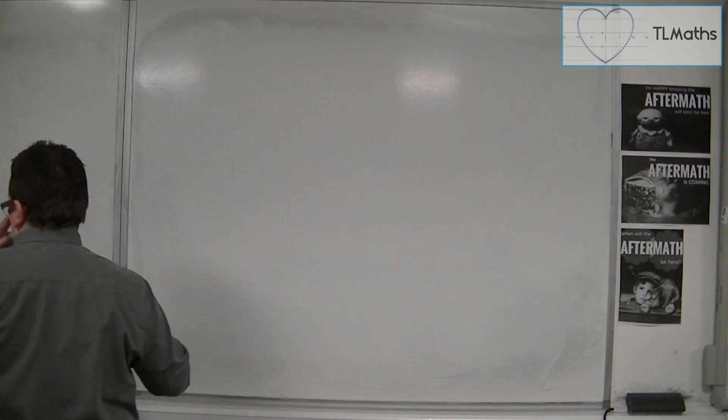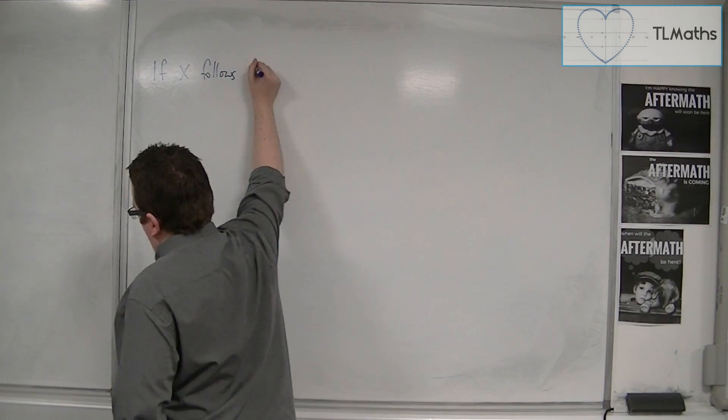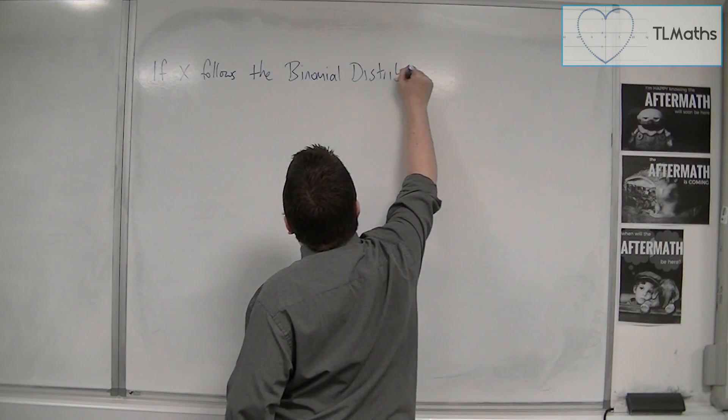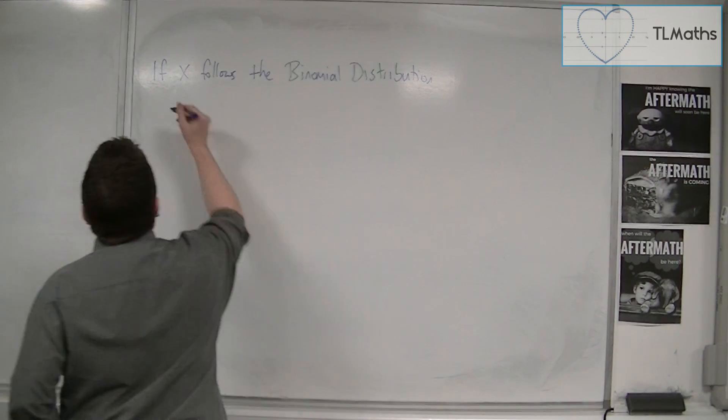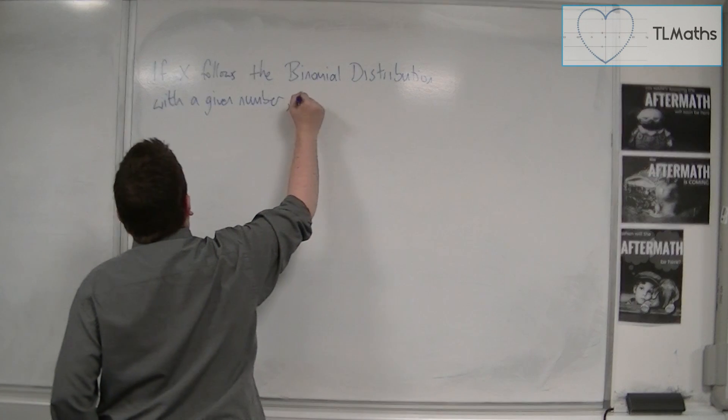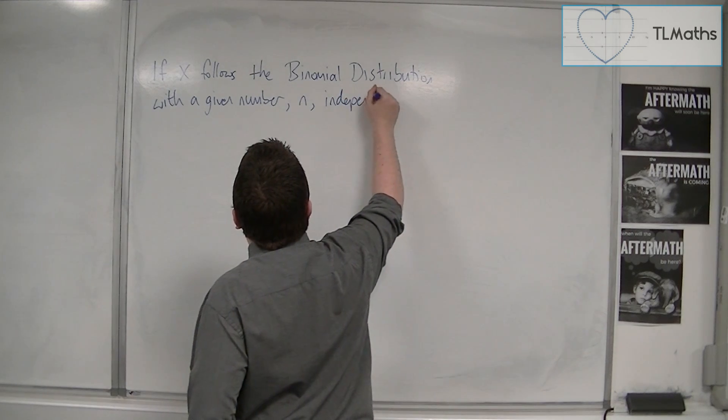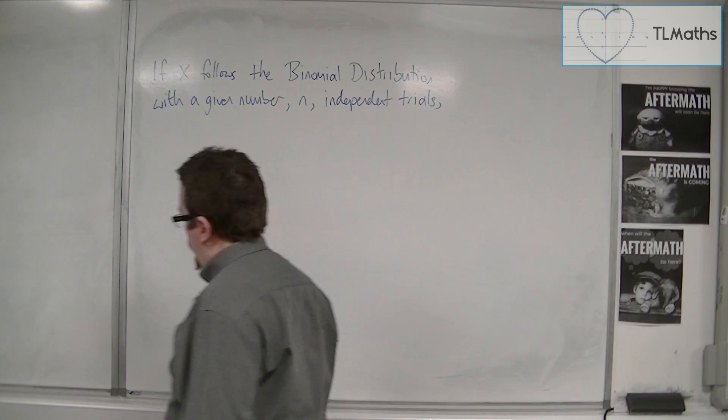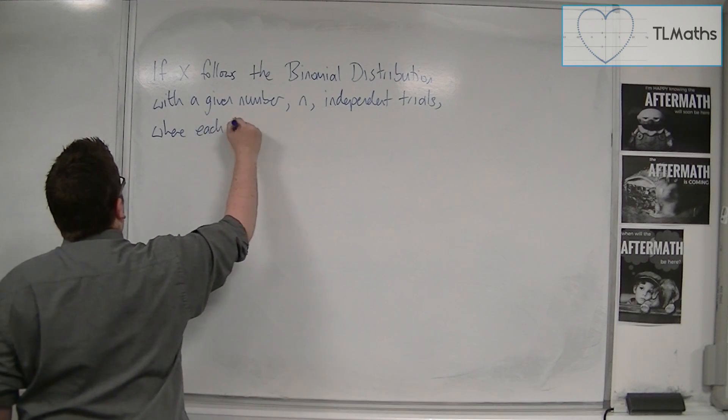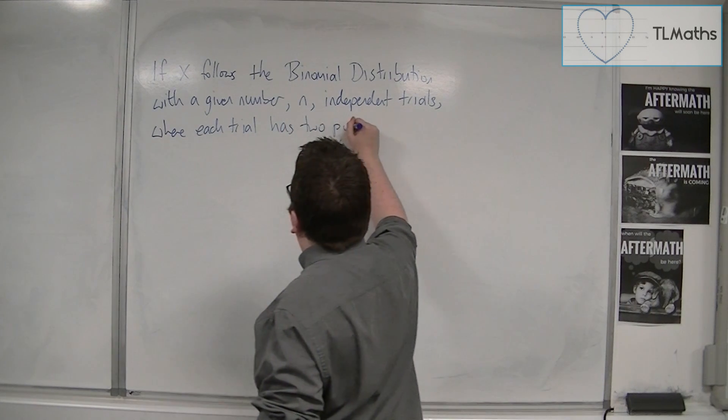We say that if X follows the binomial distribution with a given number n independent trials, where each trial has two possible outcomes.